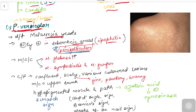The most common cause is Malassezia globosa, though some studies cite Malassezia sympodialis and Malassezia furfur. If you have to choose one option, choose globosa.